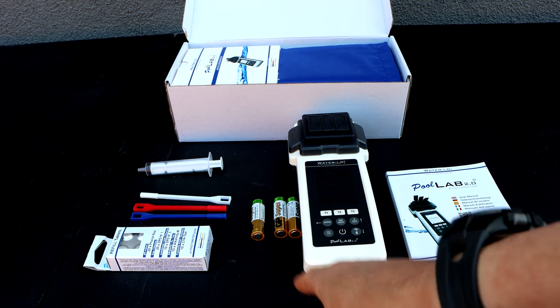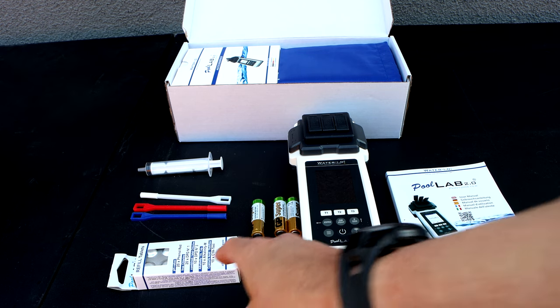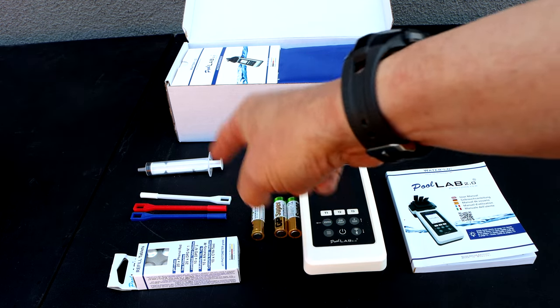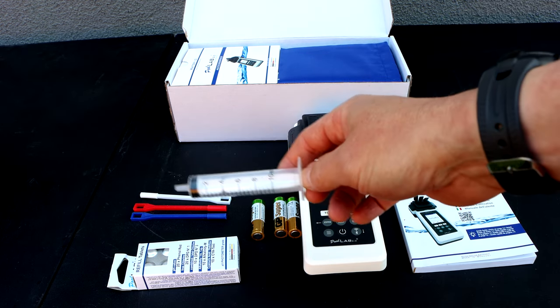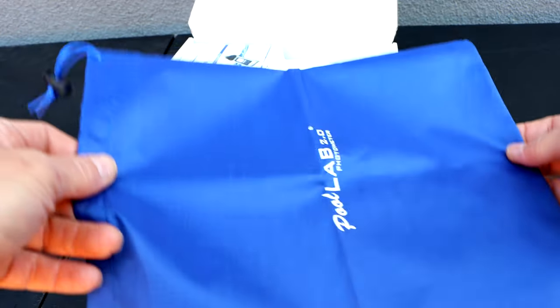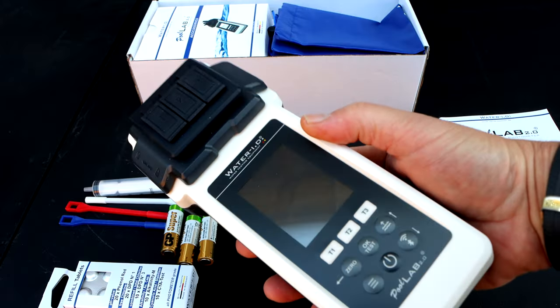In the box is the manual, the photometer itself, batteries, some tablets, three different crushers, a syringe for the water sample, and a nice storage bag.